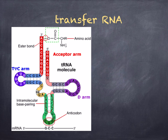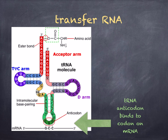During protein synthesis, the anticodon at the bottom of tRNA binds to the complementary codon on the mRNA. The tRNA anticodon binds to the codon on the mRNA, and the tRNA is suited to its role for lining up amino acids on the mRNA because it has this anticodon on the bottom and an acceptor arm at the top that attaches to an amino acid.